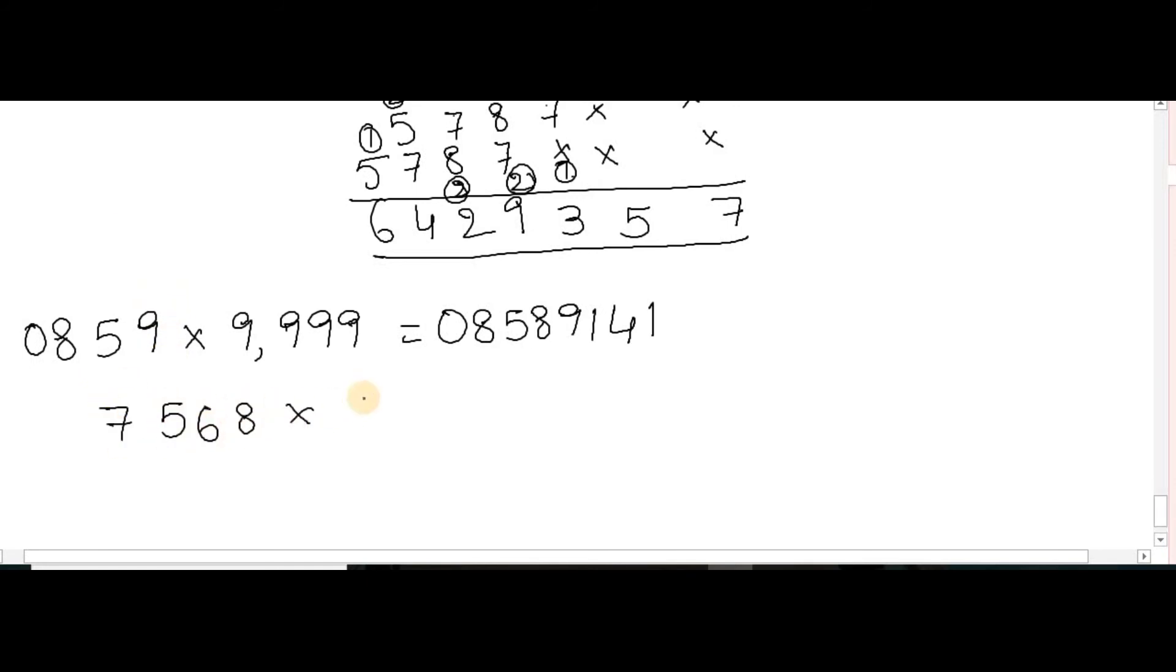7,568 multiplied by 9,99,999. So here I have how many 9s? 1, 2, 3, 4, 5, 6 nines. But here I have 4 digits, so I should join 2 zeros.